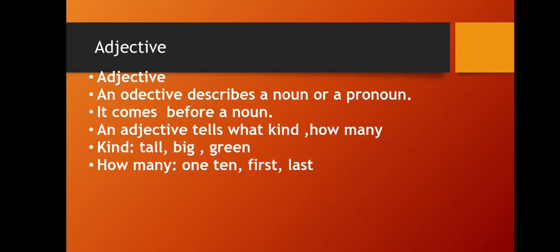Adjective describes a noun or pronoun. Usually it comes before the noun, but it can come after also. An adjective tells what kind - like tall, big, green - or how many - like one, ten, first, last. There are many types ahead we will study slowly and gradually.